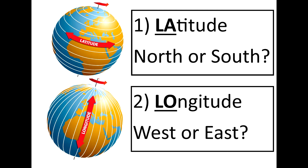We can use lines of latitude and longitude to identify locations around the world. First, look at the latitude — is the location north or south of the equator? Second, look at the longitude — is the location west or east of the prime meridian?